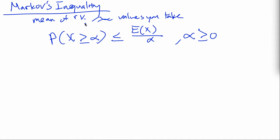And you can see how this intuition holds because if alpha is huge, then this fraction goes to 0. And so the probability of this random variable being larger is not very likely. Cool.